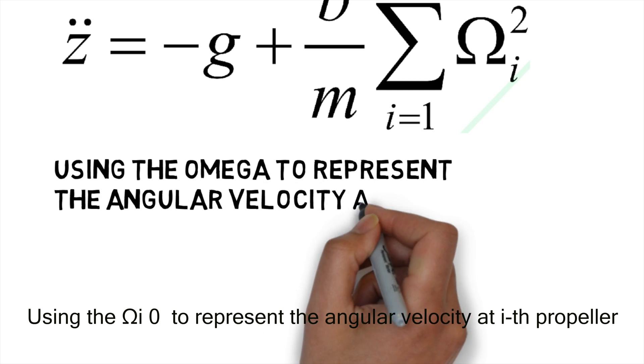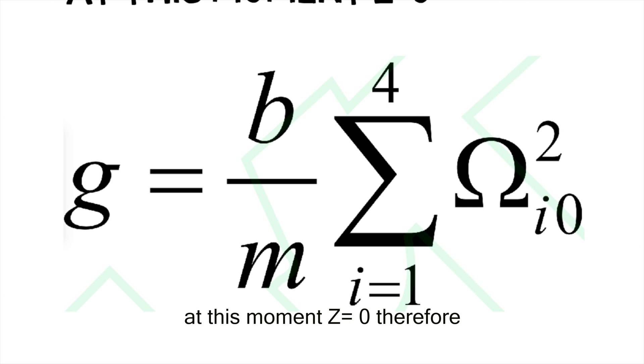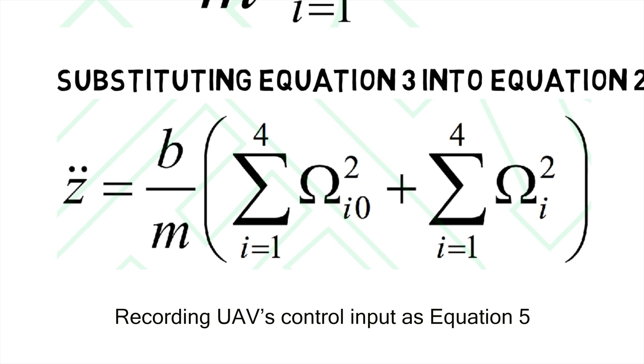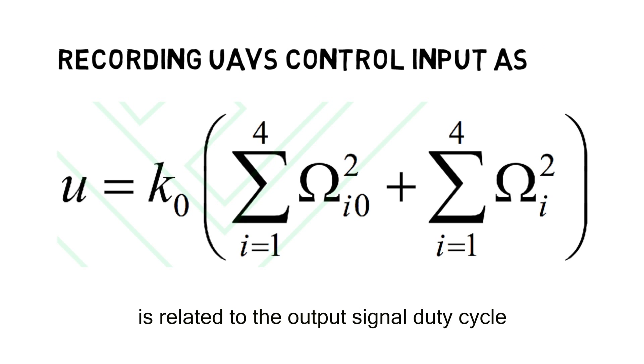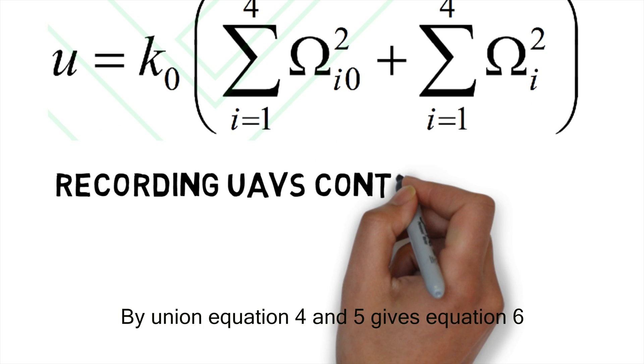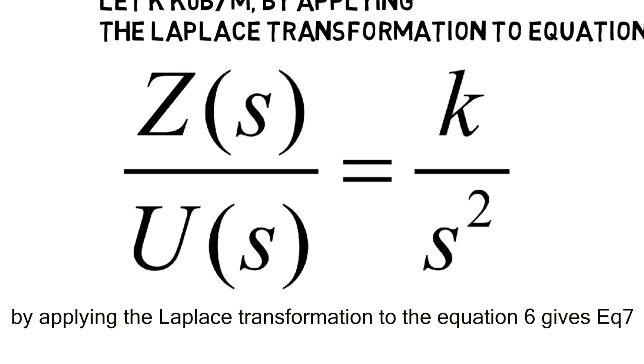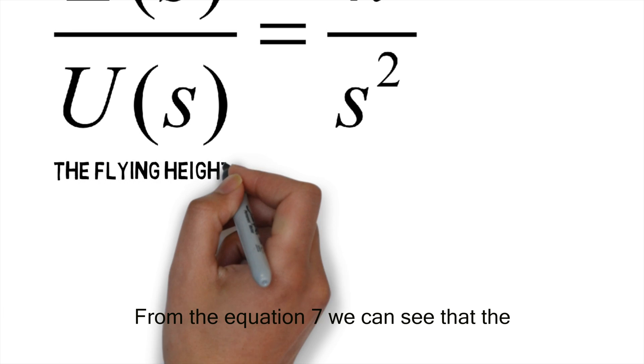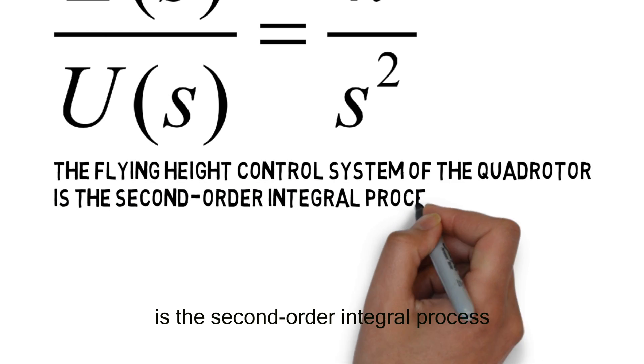When the quadrotors are hovering, theta and phi are close to zero, the flight height is approximately satisfied. Using omega to represent the angular velocity at each propeller. When the UAV is in equilibrium, at this moment, z double dot equals to zero. Therefore, we get equation three. Substituting equation three into equation two gives equation four. Recording UAV's control input as equation five. In the above equation, the value of k0 is related to the output signal duty cycle. By combining equation four and five gives equation six. Let k equals to k0 times b divided by m. By applying the Laplace transformation to equation six gives equation seven, which is the transfer function of the quadrotor system in hover mode. From equation seven, we can see that the controlled object in the flying height control system of the quadrotor is the second order integral process. So the PD controller is the choice.